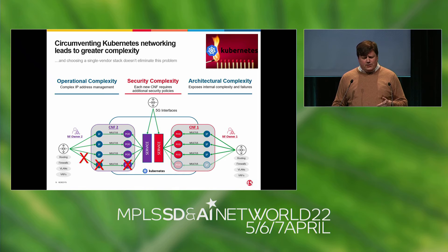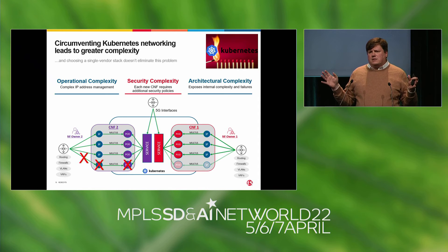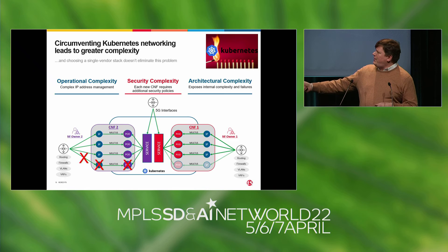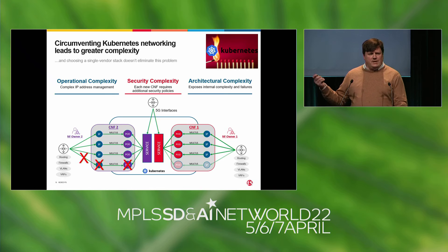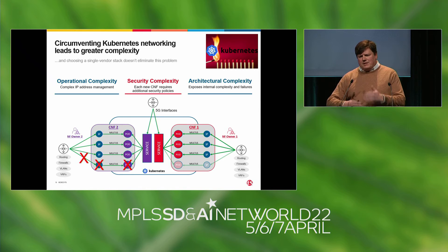Then you have the security complexity. Once you explode out of Kubernetes, your attack surface dramatically increases. Instead of having one path through to these services, you've got all these paths to each different network function, to each different interface they expose. Additionally, you have an overall architectural complexity — you're taking something highly dynamic and exposing it out.